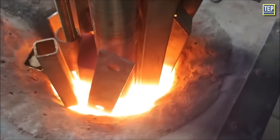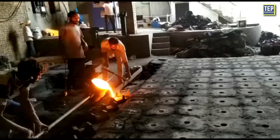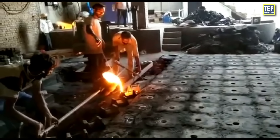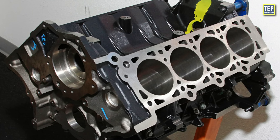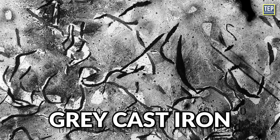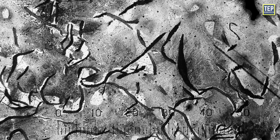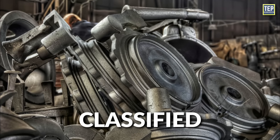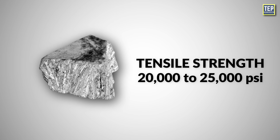Cast iron blocks are made from a metal alloy formed by melting iron. The molten metal is poured into a mold and allowed to cool and solidify. The type of cast iron used in engine blocks is gray cast iron, which has a graphite microstructure that delivers its characteristic gray color. Gray cast iron is classified into different classes, with classes 20 and 25 being the most popular for passenger car engine blocks, featuring a tensile strength of 20,000 to 25,000 PSI.